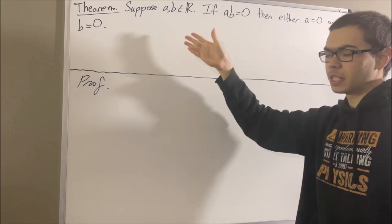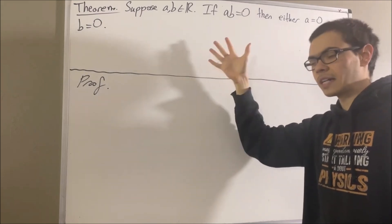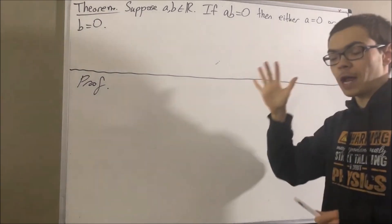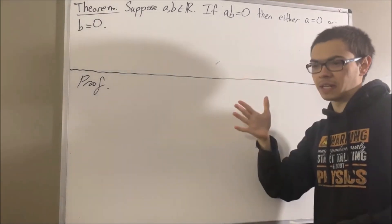Okay, now in proving this theorem, we are going to rely on some facts which come from the field properties of the real numbers. The first is, for every real number x, 1 times x is equal to x.